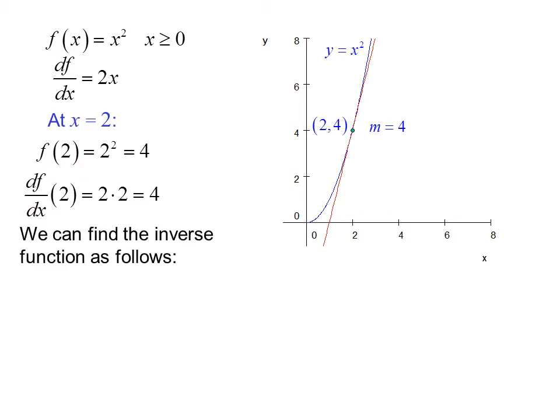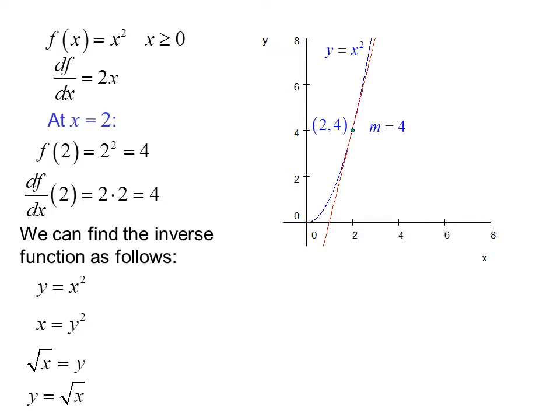We can find the inverse function as follows. Start with y equals x squared, switch x and y, and solve for y. Notice this time I chose to switch x and y first instead of waiting until the end — you get the same answer either way. So f inverse of x equals radical x.